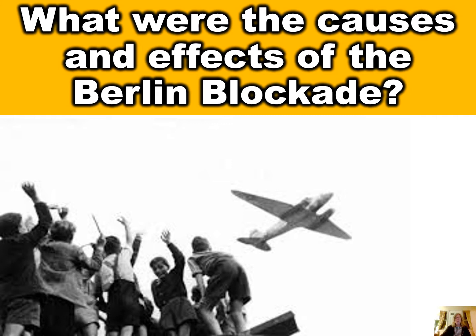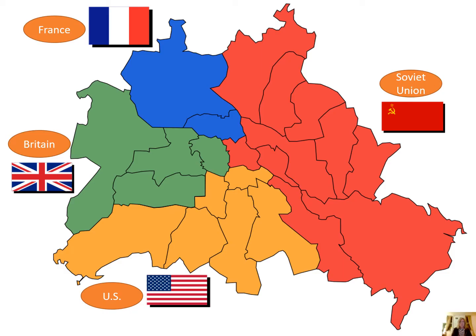What were the causes and effects of the Berlin blockade? That's the question you should be able to answer after watching this video. After World War Two was over, Germany lost the war, the Nazis were gone, and Germany had to rebuild their political system.